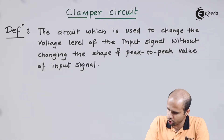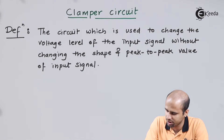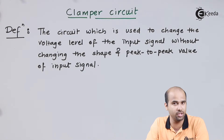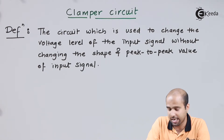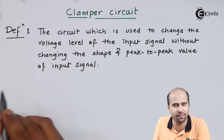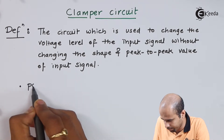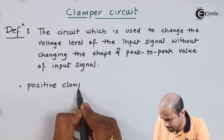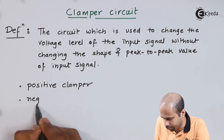The circuit which is used to change the voltage level of the input signal without changing the shape and peak-to-peak value of the input signal is called a clamper circuit. As far as classification is concerned, we have only two types of clamper circuit: one is positive clamper and another is negative clamper.